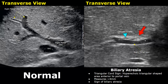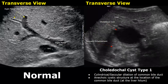A choledochal cyst type 1 is a cylindrical or saccular dilation of the common bile duct. An anechoic cystic structure will be seen at the location of the common bile duct at the liver hilum. The cyst will also give posterior acoustic enhancement.